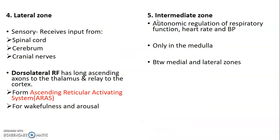The lateral zone is usually sensory and receives input from the spinal cord, cerebrum, and cranial nerves. The dorsolateral reticular formation has long ascending axons to the thalamus that relay to the cortex, forming the ascending reticular activating system for wakefulness and arousal.